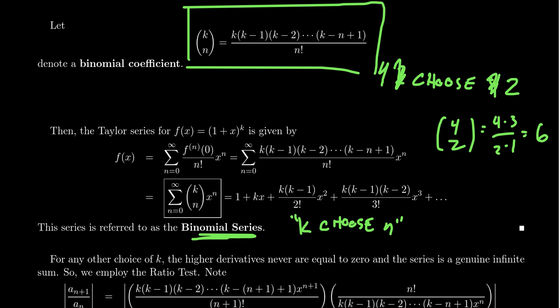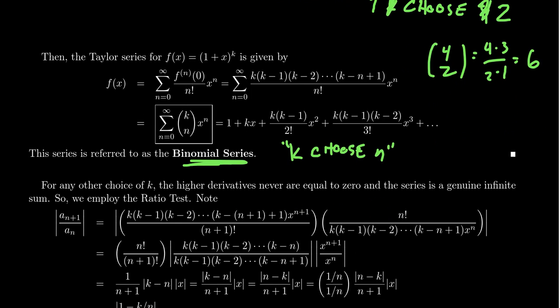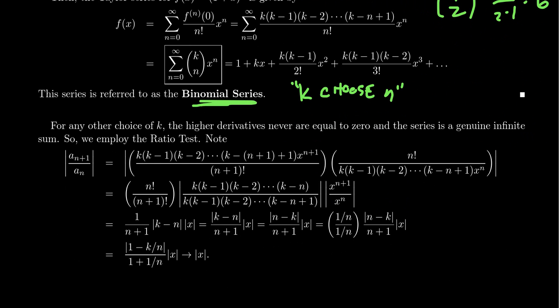With all the emphasis on Taylor's inequality, you might wonder: is the function actually equal to its binomial series? The answer is yes. To see this, we first determine the radius of convergence using the ratio test — computing a_(n+1) over a_n.